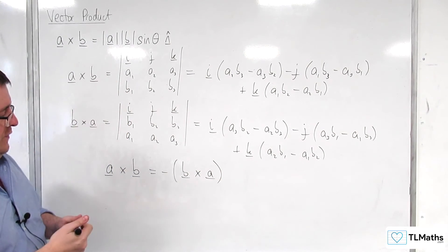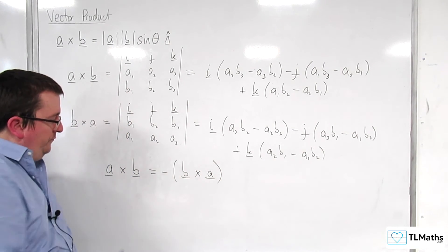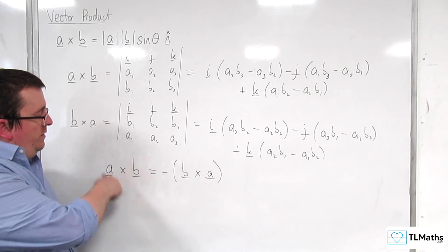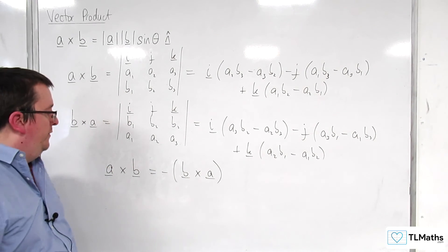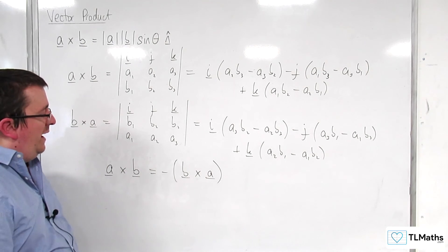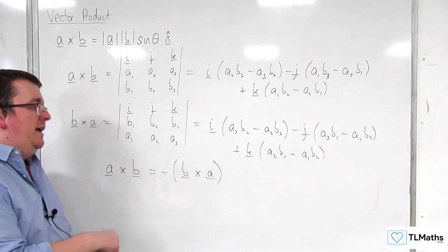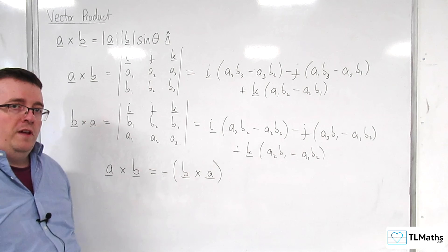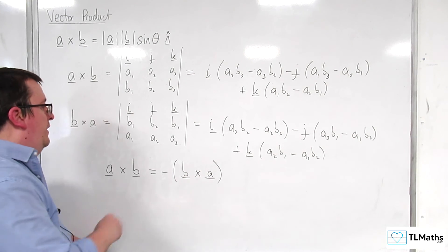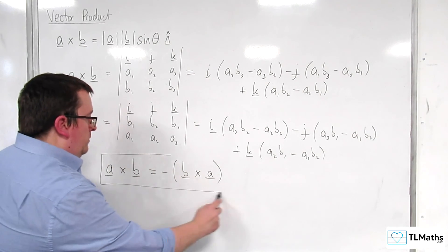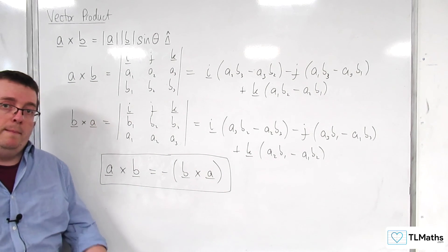So if you reverse the direction of your vector product, so if you do B cross A instead of A cross B, it's the negative of the other one. So this is a useful fact to remember.